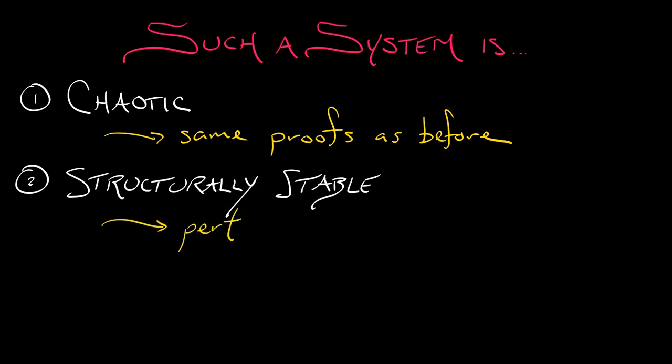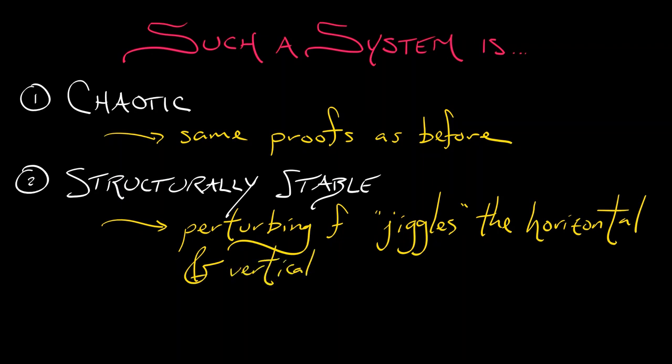This system is also structurally stable. Why? If I perturb this map a little bit, what it does is it jiggles the horizontal and the vertical strips just a bit. Because we're taking intersections of these things, everything is going to work out same as before. But this system is also a little bit richer than the horseshoe that we have looked at.